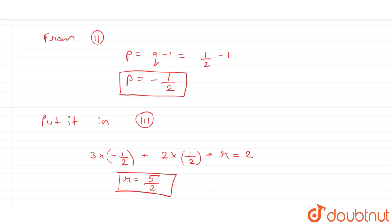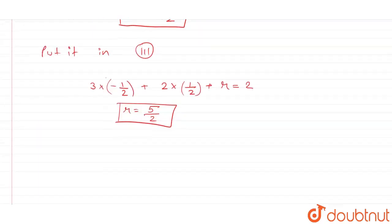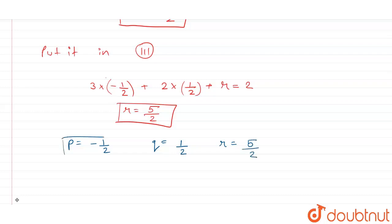Therefore, we have our values, that is p is equal to minus 1 by 2, q is equal to 1 by 2 and r is equal to 5 by 2.